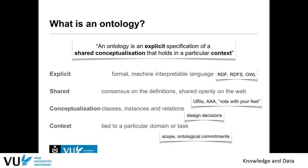Before we start with the engineering part, let's recap what an ontology is. One of the most accepted definitions is that an ontology is an explicit specification of a shared conceptualization that holds in a particular context. Explicit means that you have a formal, machine-interpretable language — RDF, RDFS, and OWL are machine-interpretable. Shared means you share it between people, you have consensus, and you share it on the web, with a meta-model describing the data.